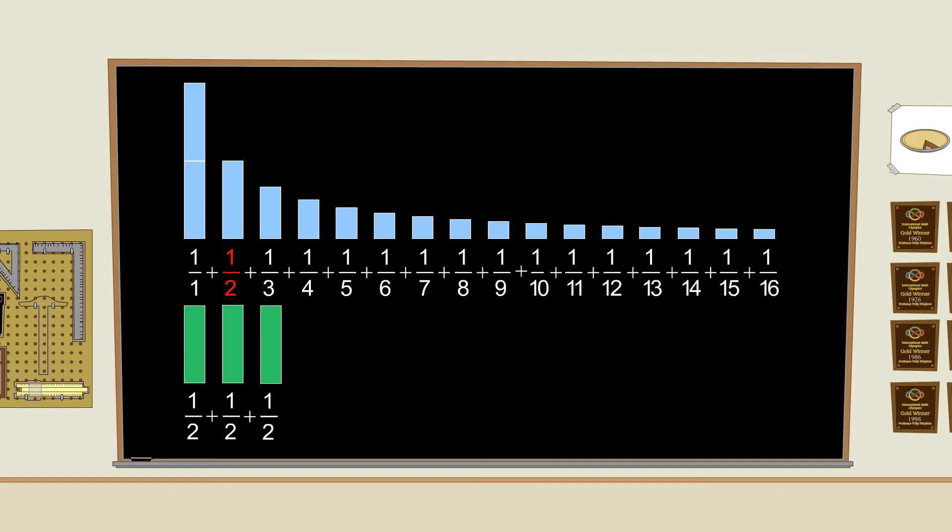Now, notice that the next two terms, 1 third and 1 fourth, are each at least as big as 1 fourth. So, if we add them together, their sum will be at least as big as 1 fourth plus 1 fourth, or 1 half.